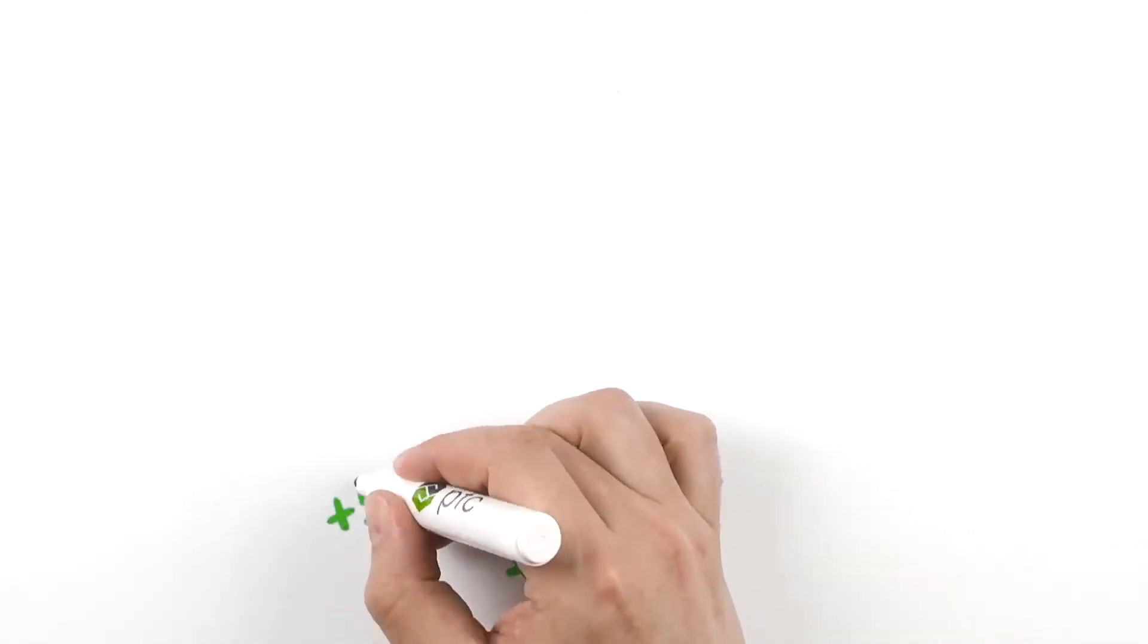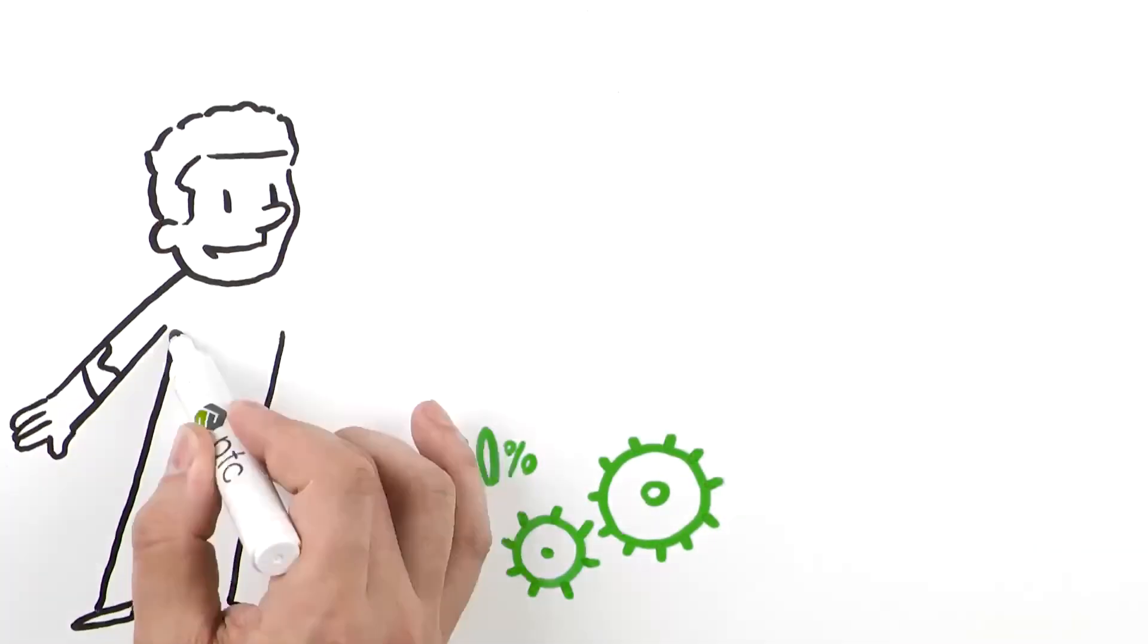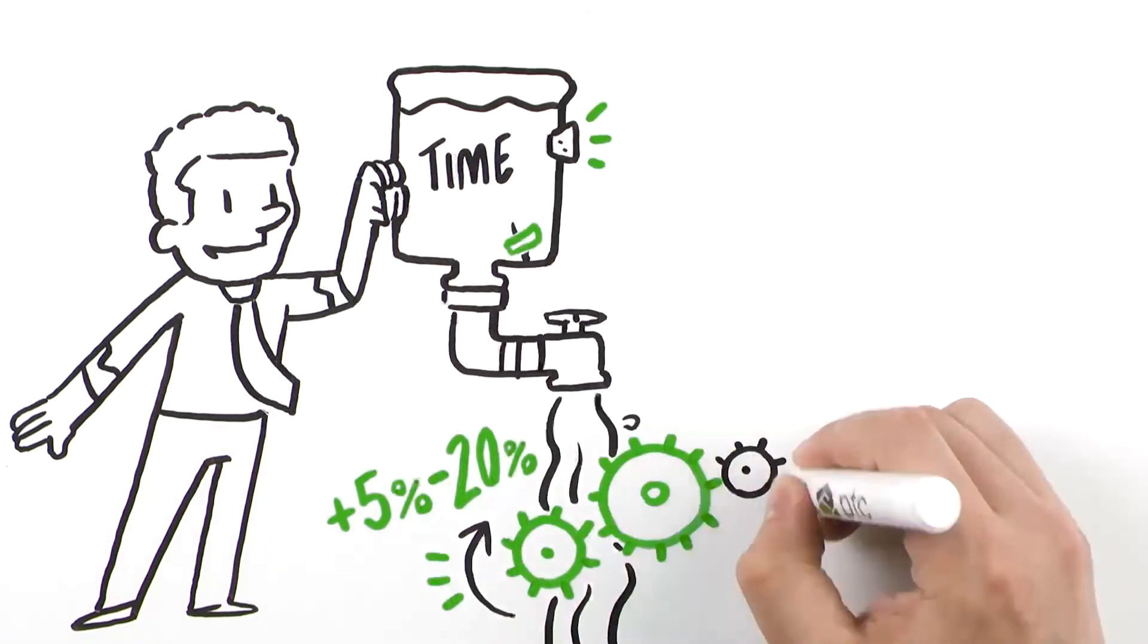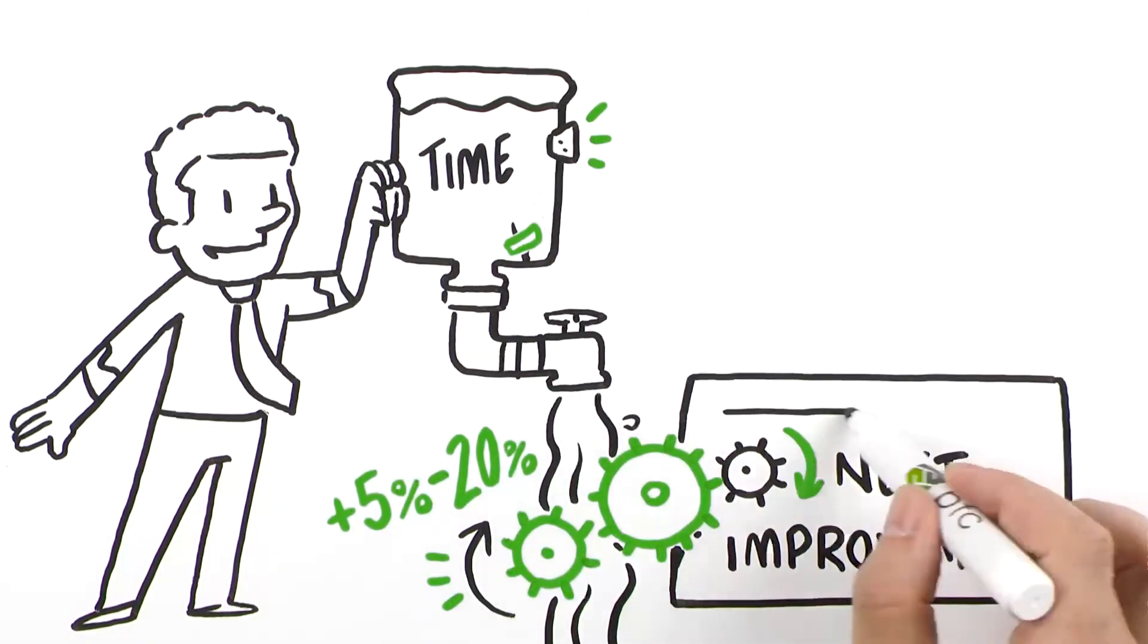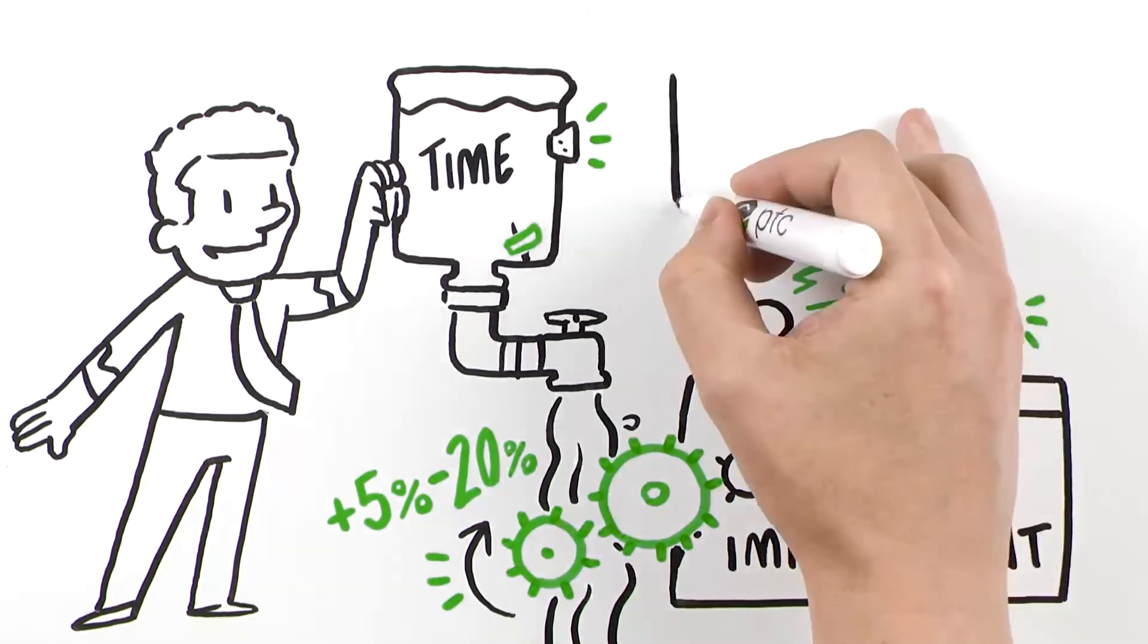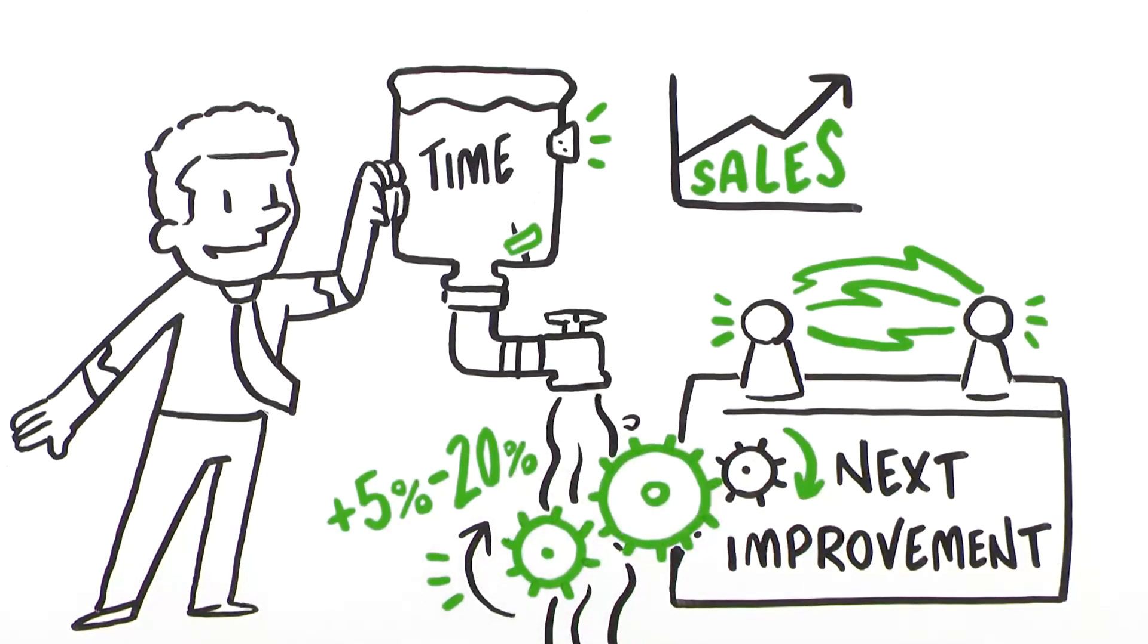And with the 5-20% or more improvement you can expect, your team can put an engine in place that funds the next improvement, or be used for other business priorities, like supporting additional sales with higher production, or taking the next step on your digital journey to transformational business impact.